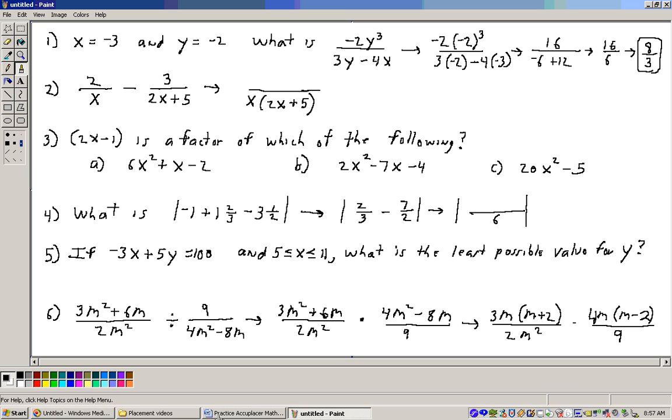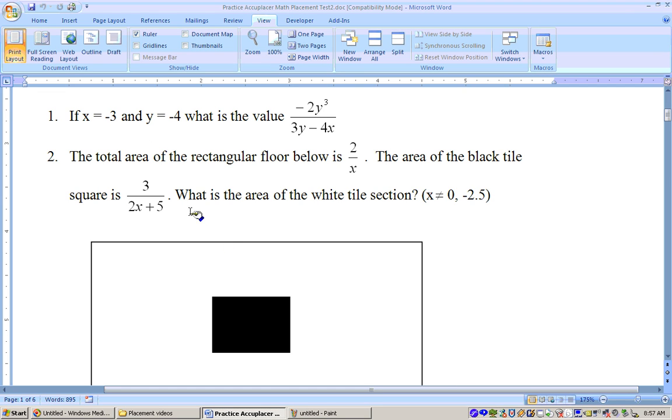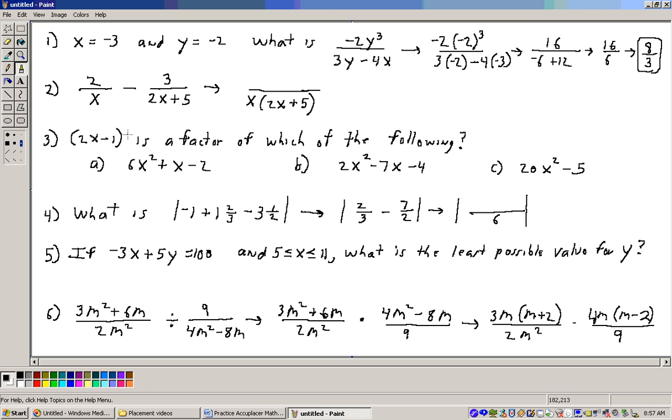On the second problem, it says the total area of the rectangular floor below is 2 over x. That's the whole thing, including the black area. And it says the area of the black tile is 3 over 2x plus 5. What is the area of the white tile? So we need to take this whole thing, 2 over x, and subtract off the area of the black area, 3 over 2x plus 5.